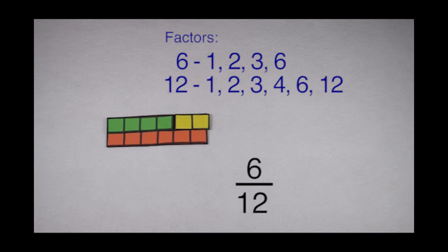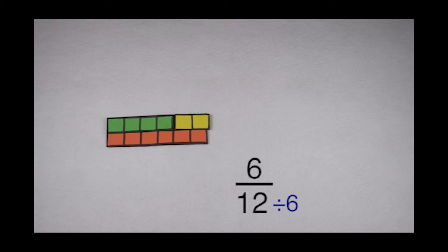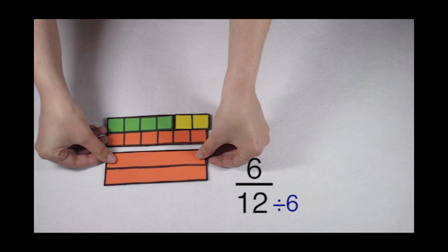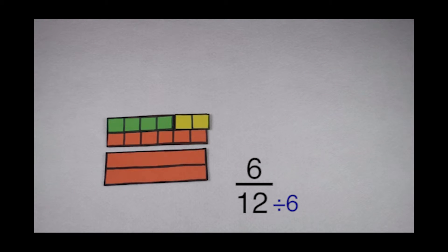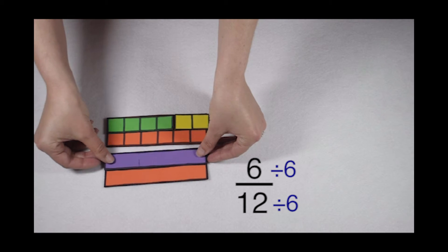Since the greatest common factor is 6, I know I can divide both my numerator and denominator by 6 evenly. So first, 12 divided by 6 gives me 2. Now I can do the same thing to my numerator. 6 divided by 6 gives me 1.